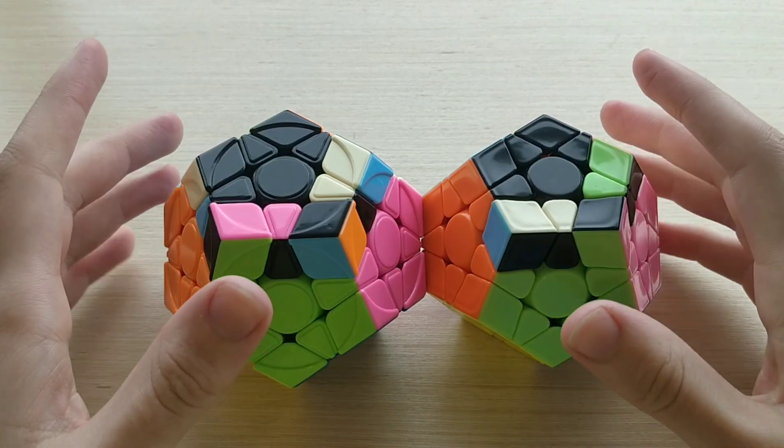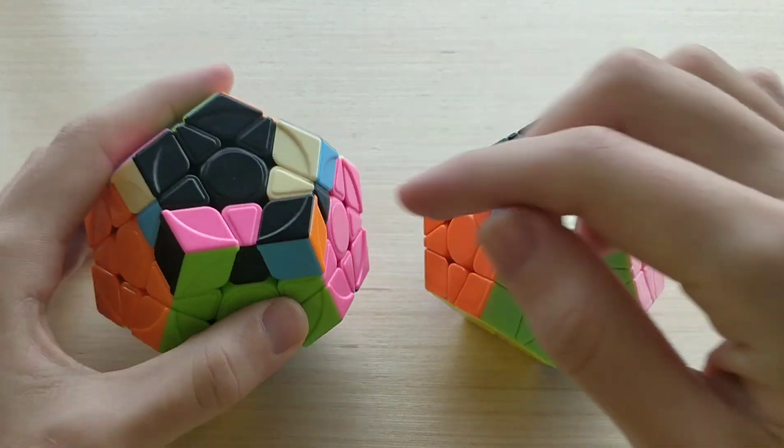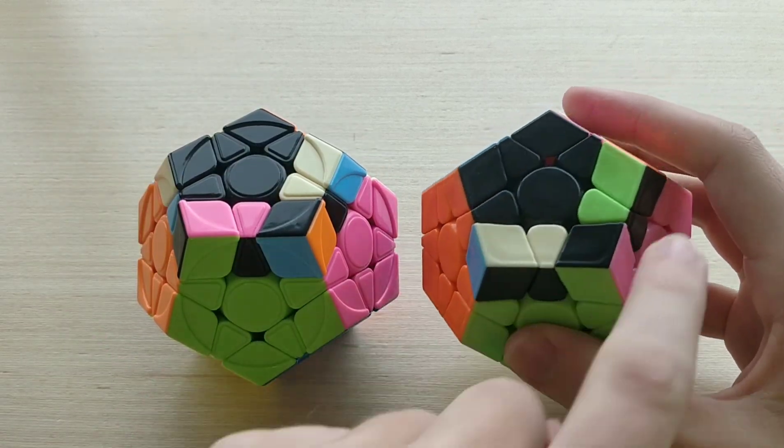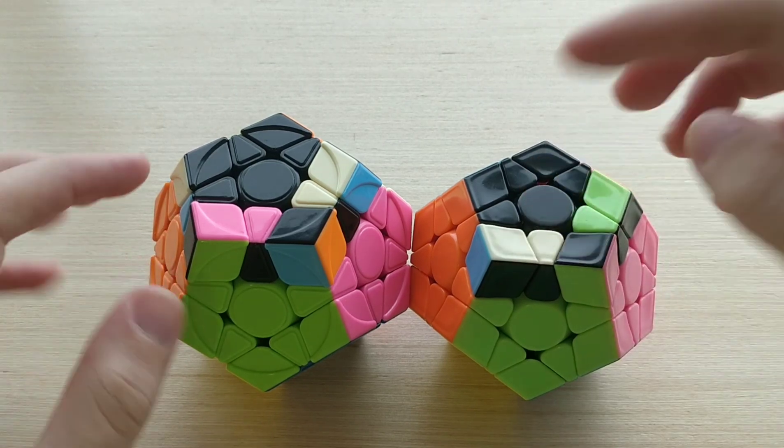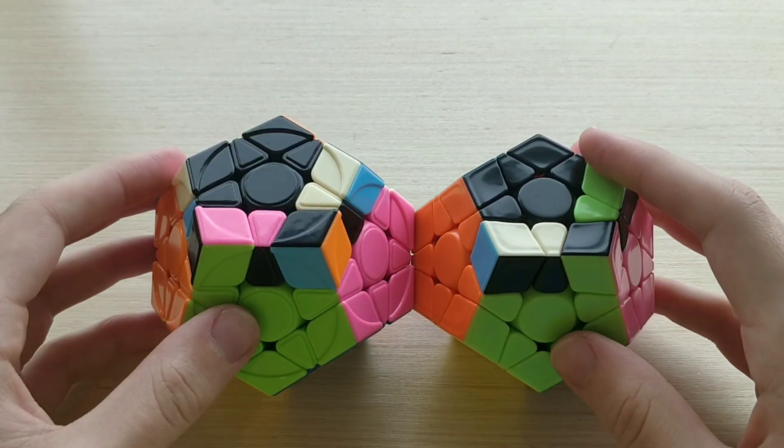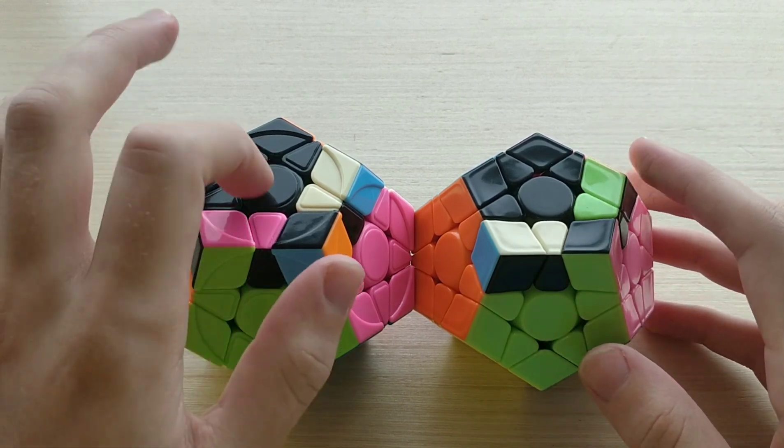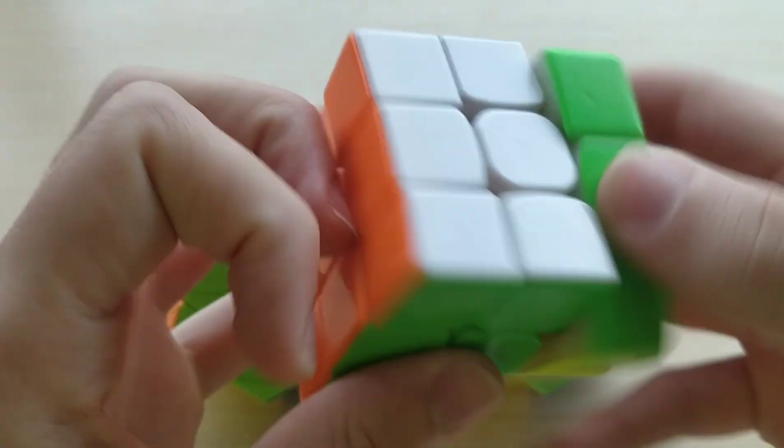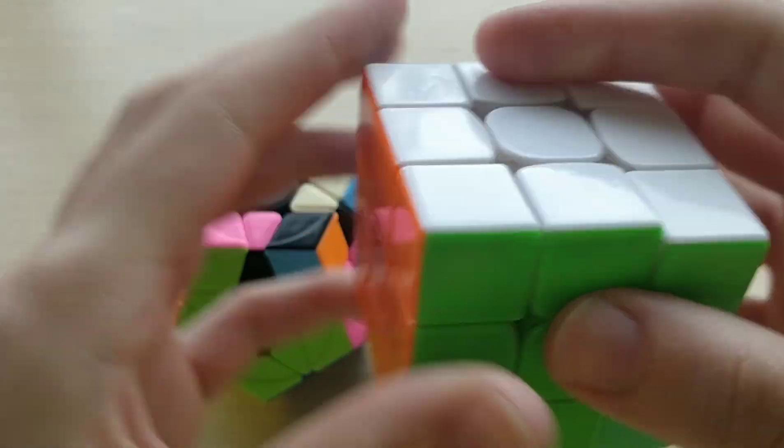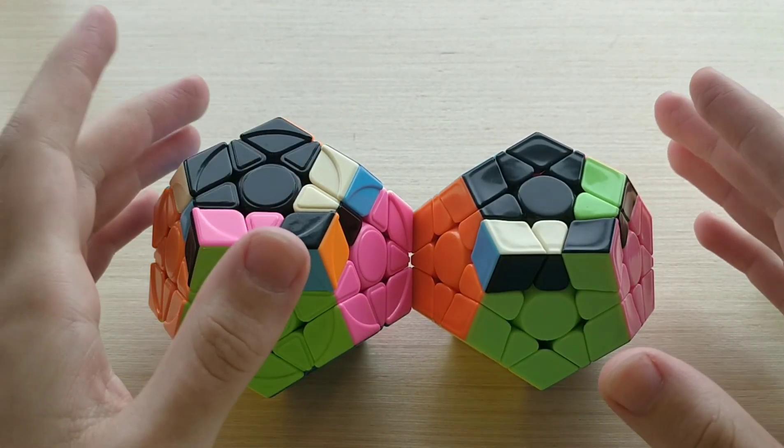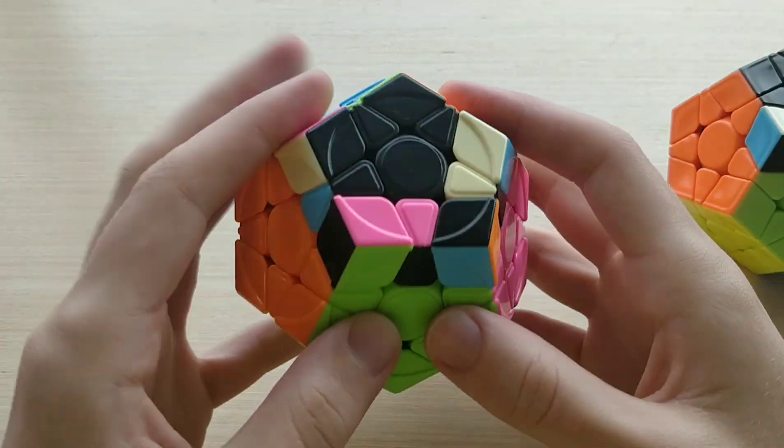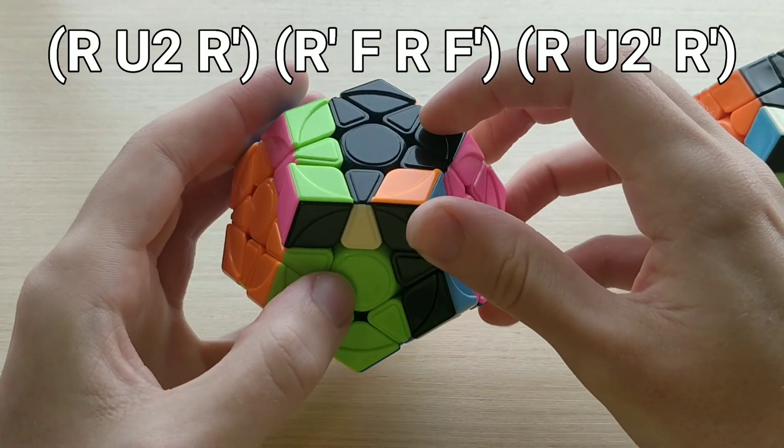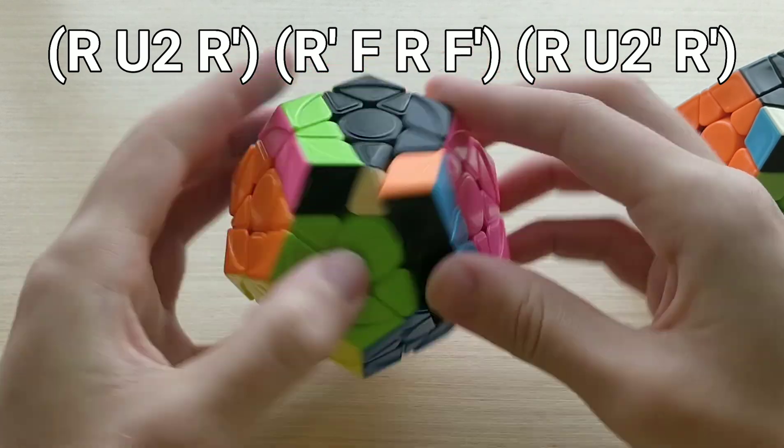So next we have set 22. These are the cases where we have this big block and one oriented corner. So for this case on the left, 22a, we have no bars here and here, and for 22b, we do have bars here and here. So again, these are just 3x3 transfers. This one here is the inverse of Sexy Sledge, so it's just hedge and inverse Sexy. And this one on the right is just this 3x3 OLL. So on 3x3, we do that with r u2' r2' and then continue. However, instead of doing u2' there, we're going to do u2 on megaminx, because u2 and u2' are different moves, so we need to make sure we're doing the right one. So on megaminx, that would look like this. From this angle, we're going to do r u2 r2' fr f' r u2' r'. So just like that.